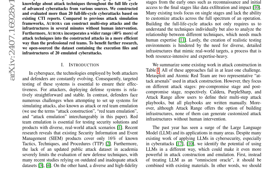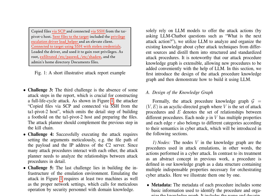We developed an attack procedure knowledge graph to integrate knowledge about attack techniques throughout the full lifecycle of advanced cyberattacks from various sources. By combining LLMs with existing materials, we can effectively integrate information from varied sources, depict complex attack scenarios, and bridge human language and machine codes. The attack procedure knowledge graph serves as the basis of attack construction, where nodes represent procedures and edges denote relationships between them.